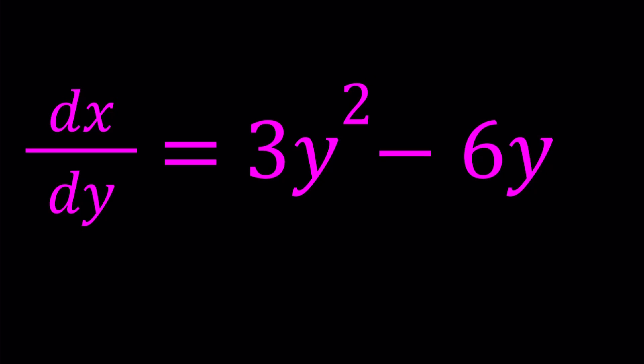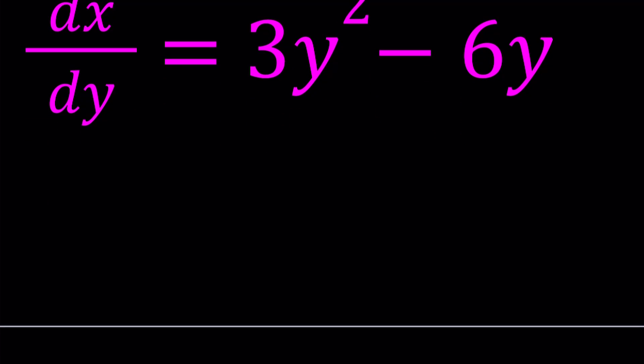One of the things you should pay attention to when you see a differential equation like this is we were not given dy/dx, we were given dx/dy, which is the reciprocal of dy/dx. So let's go ahead and multiply both sides by dy, and I'm going to write that first. So we'll get 3y squared minus 6y multiplied by dy equals dx.